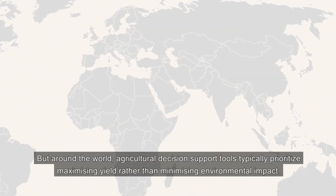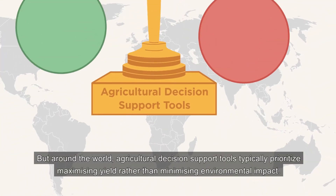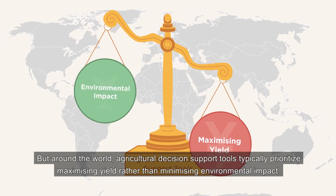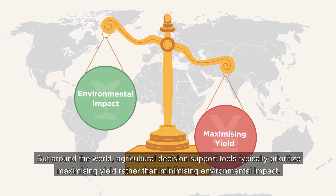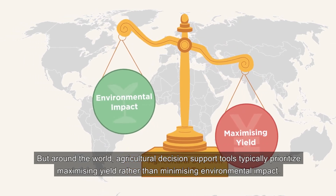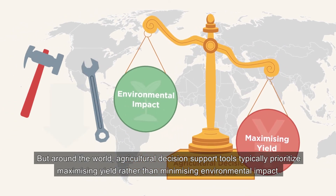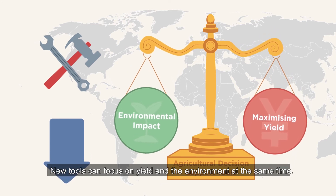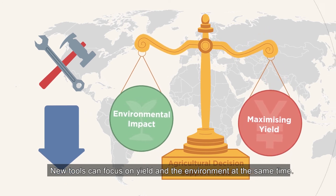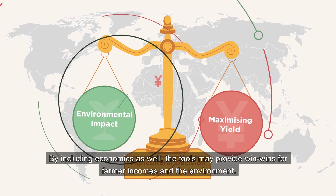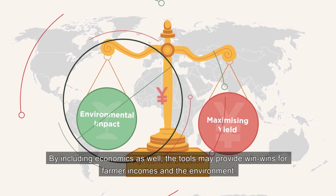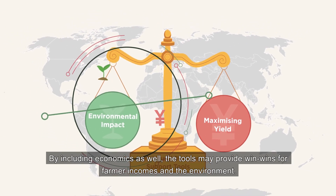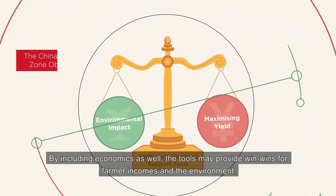But around the world, agricultural decision support tools typically prioritise maximising yield rather than minimising environmental impact. New tools can focus on yield and the environment at the same time. By including economics as well, the tools may provide win-wins for farmer incomes and the environment.